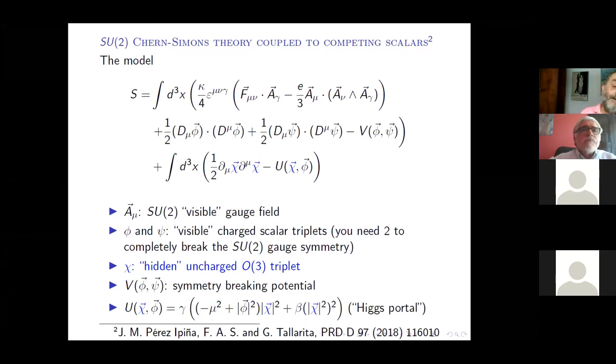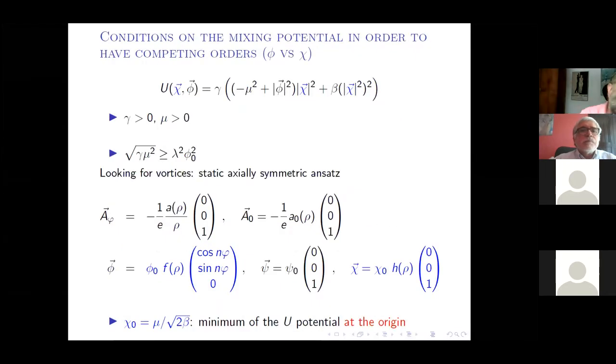This term is called Higgs portal because, well, this was a name that Wilczek invented long ago in the QCD context. But here is a portal if you think that chi lives in a hidden sector if you are working in field theory, or it's a second order parameter if you're working in condensed matter. So this is the potential again. I have no time to explain why all these conditions that are here are required in order to have completeness, but I can explain it privately. So these are the questions we want to solve, and then obtain a phase diagram to compare with condensed matter.